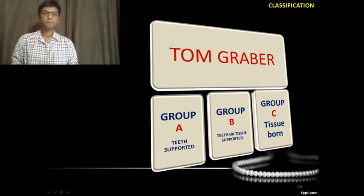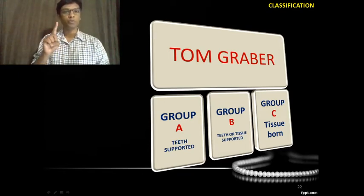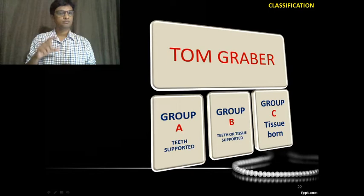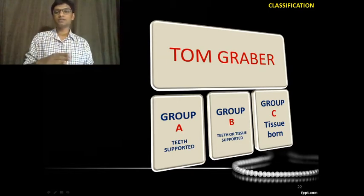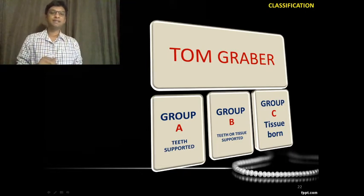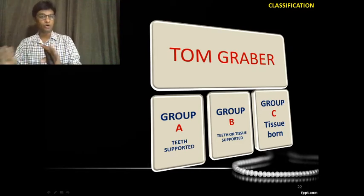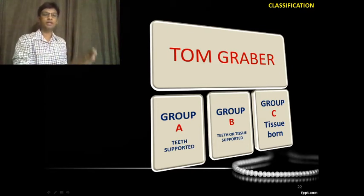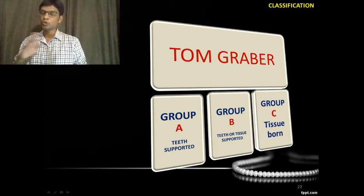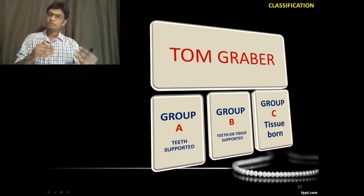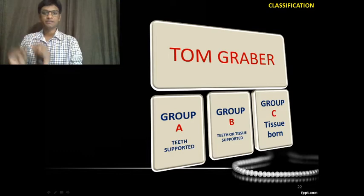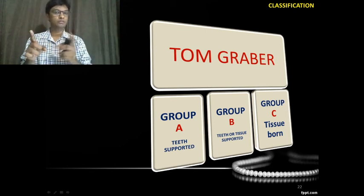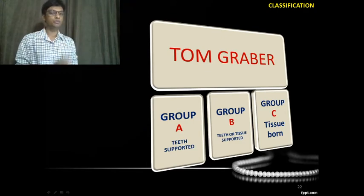Tom Graber classified appliances into Group A, B, and C. Group A is tooth-supported. Group B is tooth and tissue-supported — both, not just one. Group C is purely tissue-supported, with nothing to do with the teeth directly.